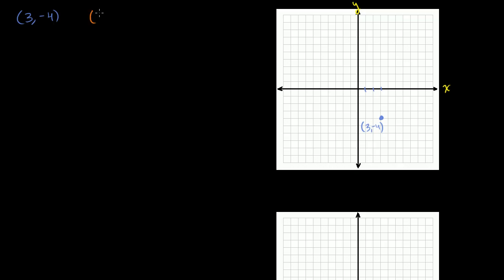And let's say I also have the point 6 comma 0. So I go 1, 2, 3, 4, 5, 6, and there's no movement in the y direction — we're just sitting on the x-axis. The y-coordinate is 0, so that's 6 comma 0. And what I want to figure out is the distance between these two points.